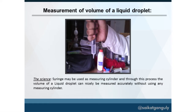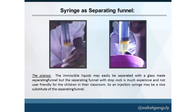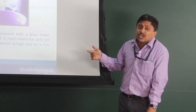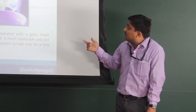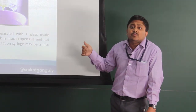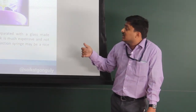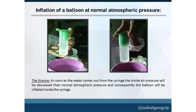This experiment demonstrates measurement of the volume of a liquid droplet, which can be done with just one syringe very simply. Additionally, a syringe can be used as a separating funnel — which is a very costly material normally — allowing easy separation of two or three immiscible liquids.